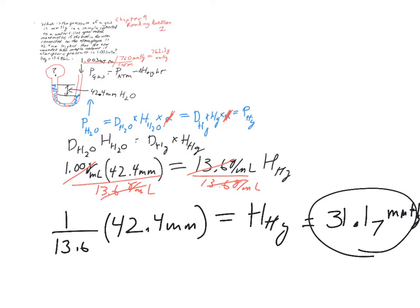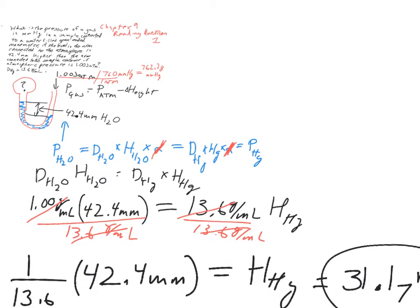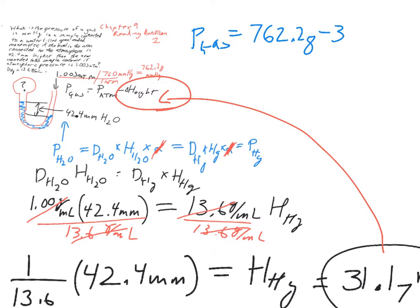That's the height difference in mercury. Now we have to take that height difference and plug it back into our initial problem. The pressure of the gas is equal to 762.28 minus the height of our column, 31.17, and that gives us 759.2 millimeters of mercury.